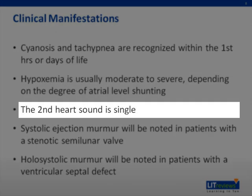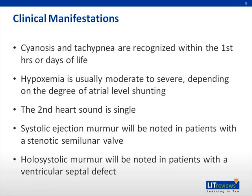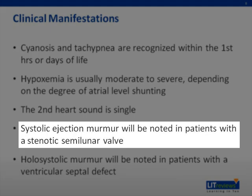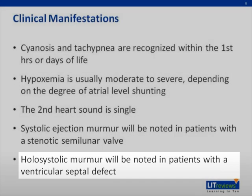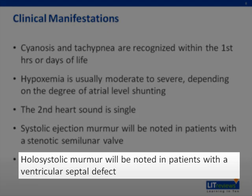Another classic finding is the single second heart sound. The second heart sound is typically intermittently split due to delay in blood from the right side during respiratory variation. However, when the aorta is anterior to the pulmonary valve and connected to the right ventricle, the splitting is no longer heard. In uncomplicated transposition we would not expect murmurs, but this lesion is commonly associated with valvular problems and septal defects. A systolic ejection murmur will be noted with a stenotic semilunar valve, and a holosystolic murmur with a ventricular septal defect.